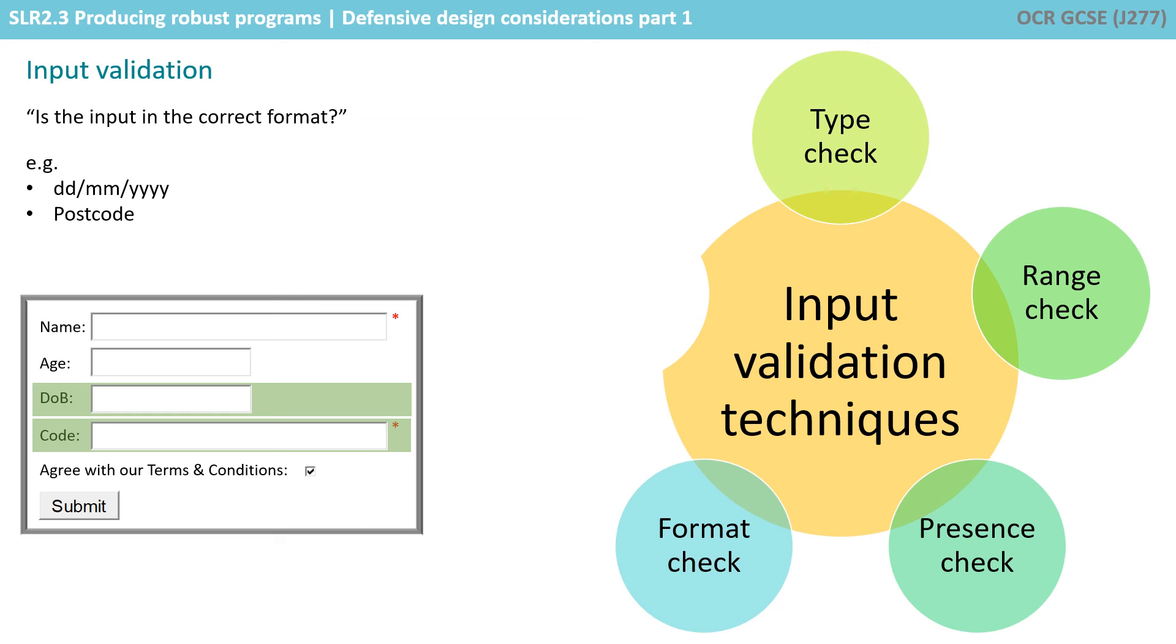A format check. Some data needs to be entered in the correct format. An obvious example is a date, and you could enter this in a number of formats. For example, two digits for the day, two for the month and four for the year. Postcodes and item codes often have specific formats that need to be adhered to. These can be checked before processing.